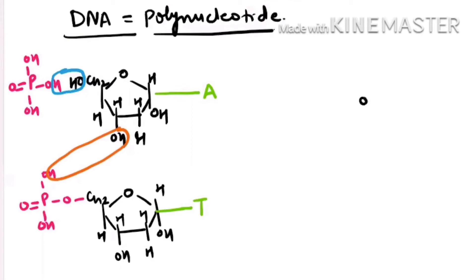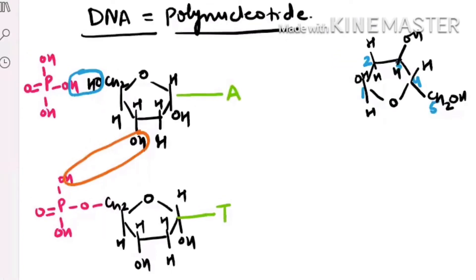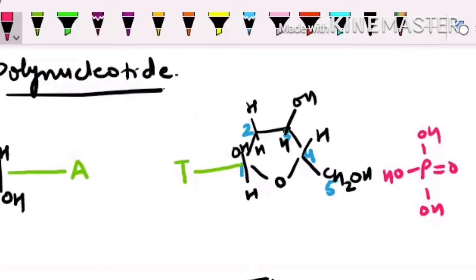On the second strand, the orientation of the sugar will be changed. See the numbering — this is your first carbon, second, third, fourth, and fifth carbon. To the first position only we are attaching the nitrogenous base. Now here this is your ester bond formation again.